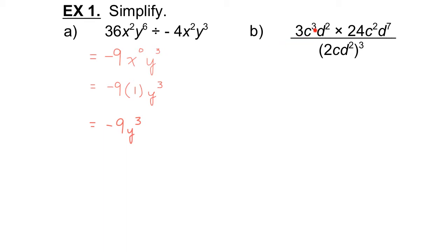Question B: 3c to the exponent 3, d to the exponent 2, times 24c to the exponent 2, d to the exponent 7 — all of that divided by 2cd squared in brackets, to the exponent 3. This looks complicated, but if you break it down step by step it's not so bad. Looking at the numerator first: 3 times 24 is 72. c cubed times c squared — multiplying powers with the same base, so we add the exponents: 3 plus 2 is 5, giving c to the exponent 5. d squared times d to the 7: add the exponents, 2 plus 7 is 9, giving d to the exponent 9. So the numerator is 72c to the 5, d to the 9.